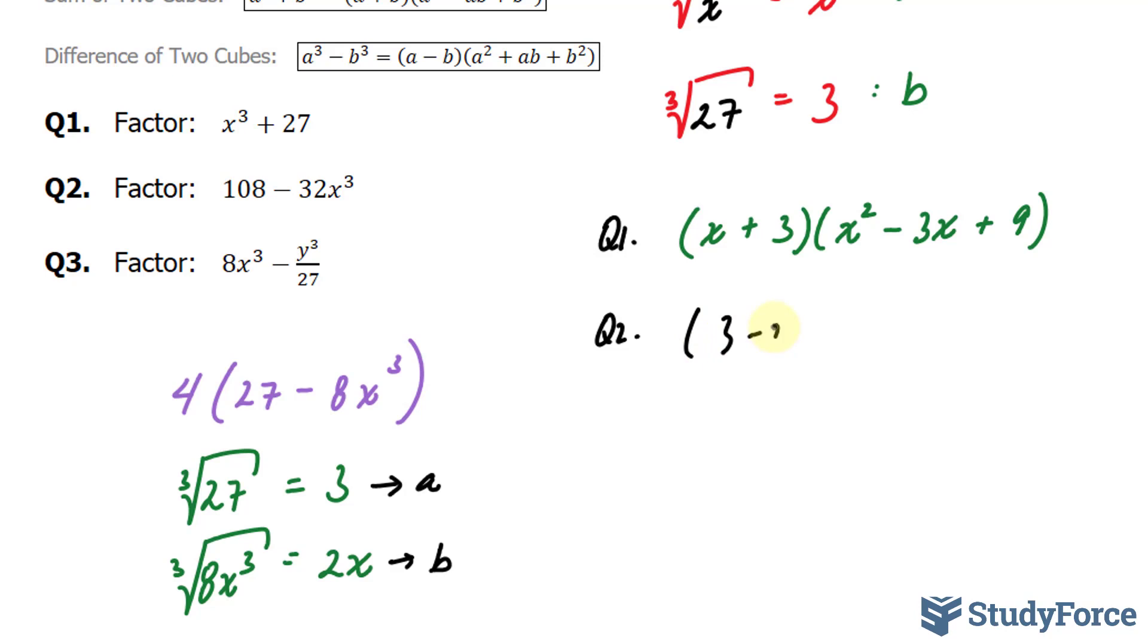We have a minus b, so 3 minus 2x. And of course, don't forget this 4 at the very end. So I'll put a square bracket out here. Let's continue.